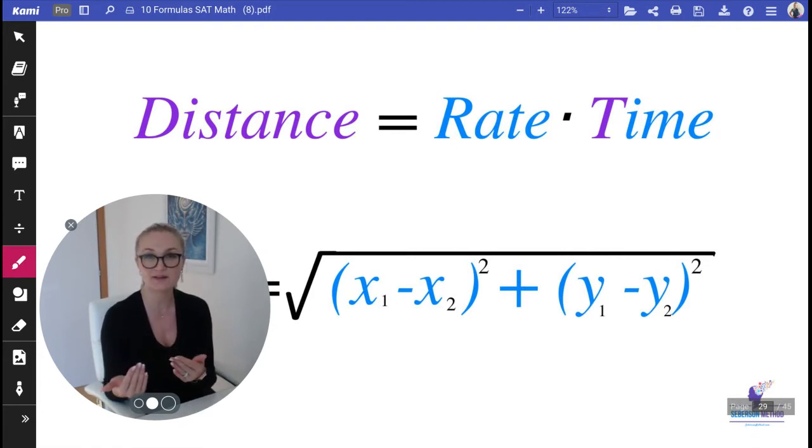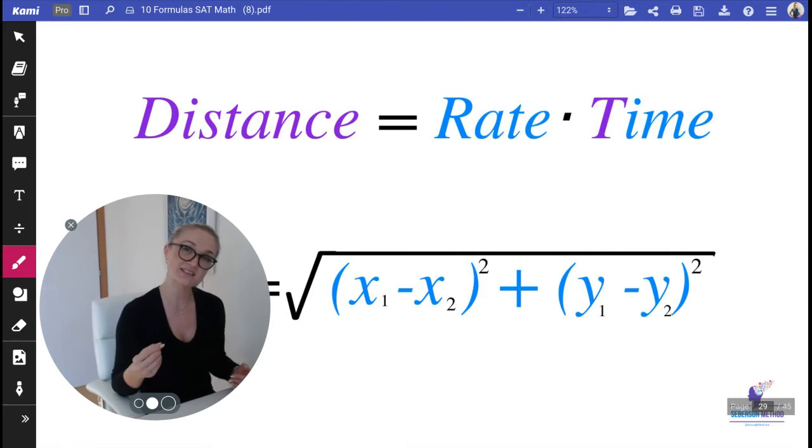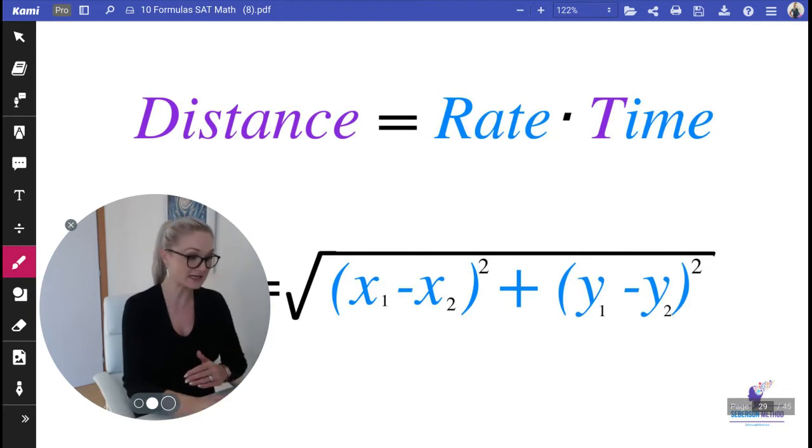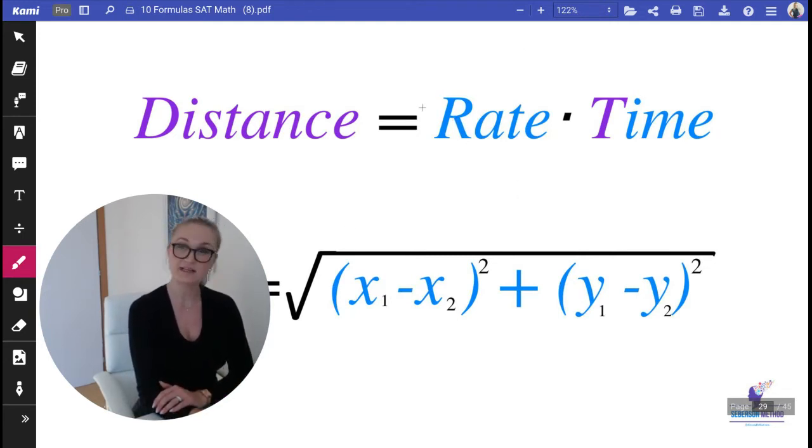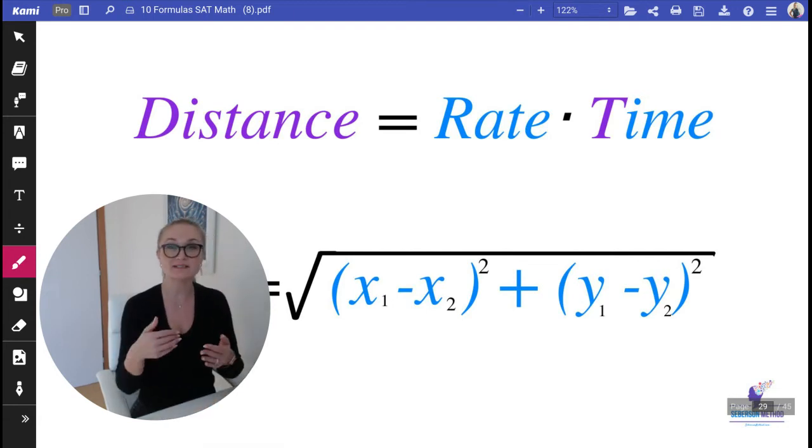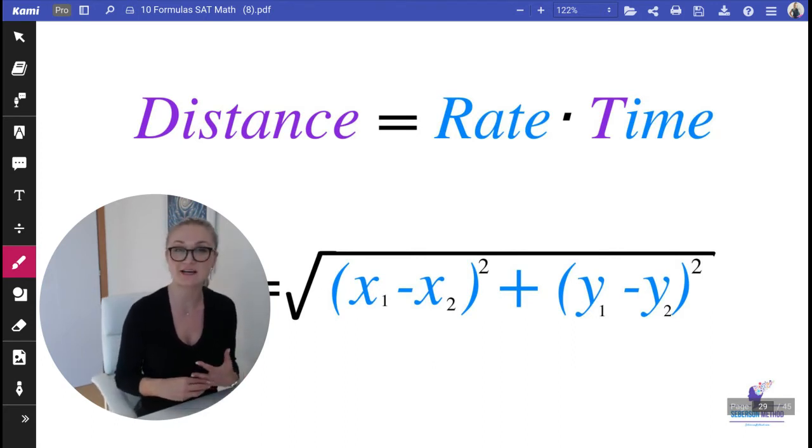the numbers that show up. Ask yourself: is this a value or a rate? If it's a rate, put it here. For example, say the bus was moving at 20 miles an hour for the last five hours. One number is a rate, the other is a value. 20 miles an hour is the rate, five hours is the value. Multiplying rate times time gives you the distance. Now, when it comes to the second